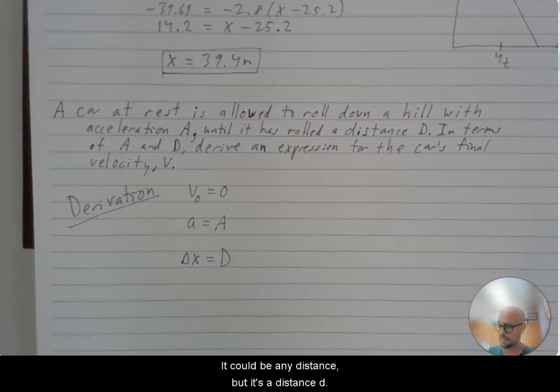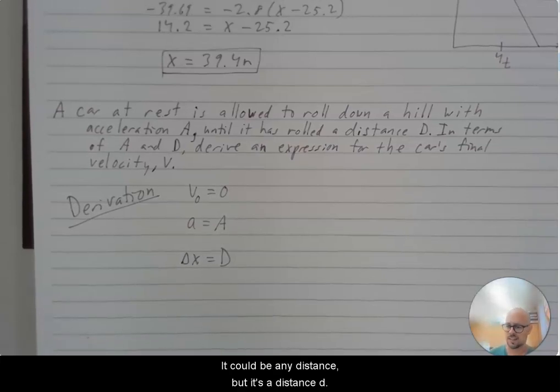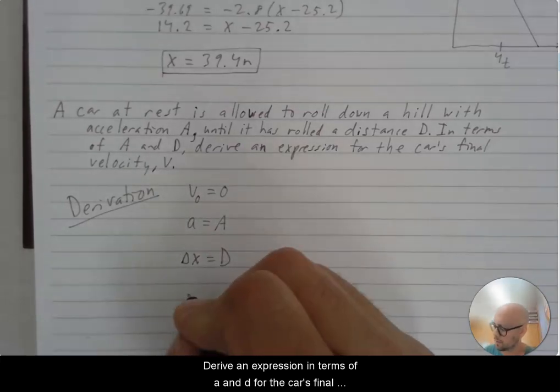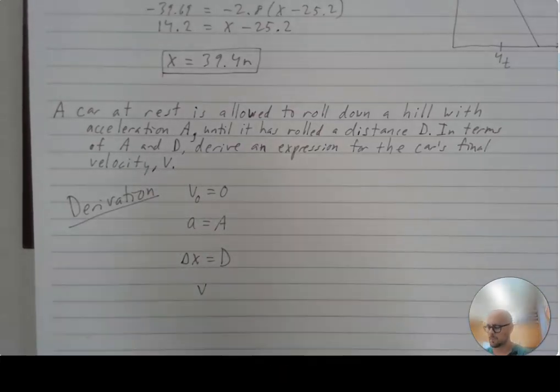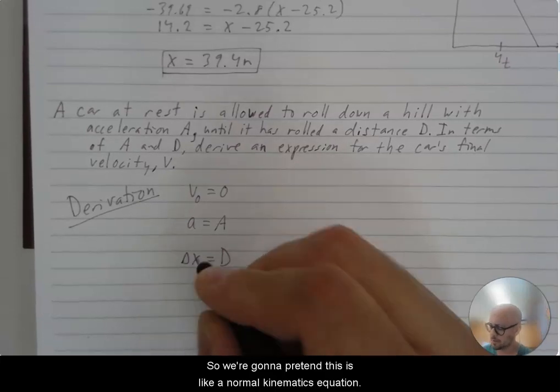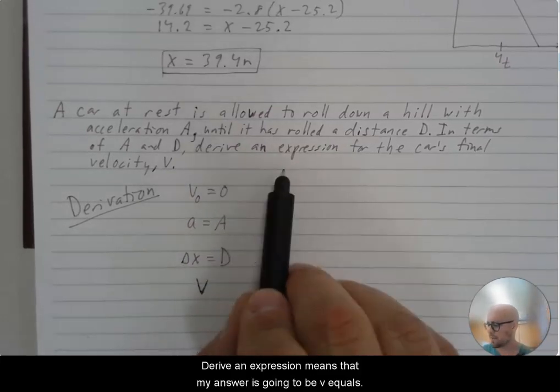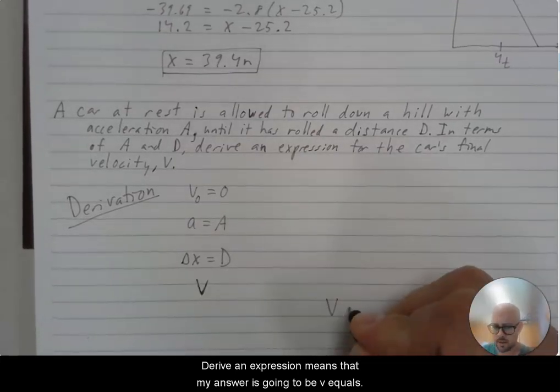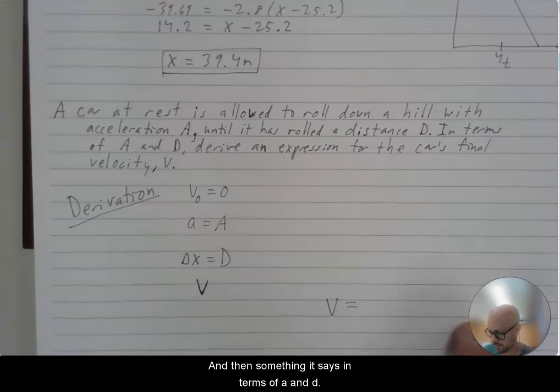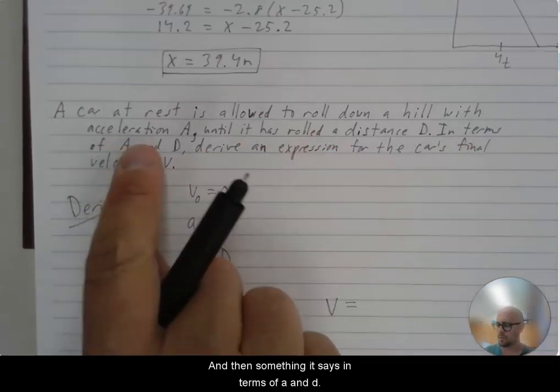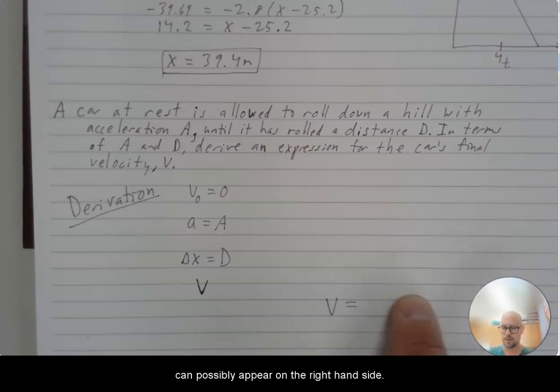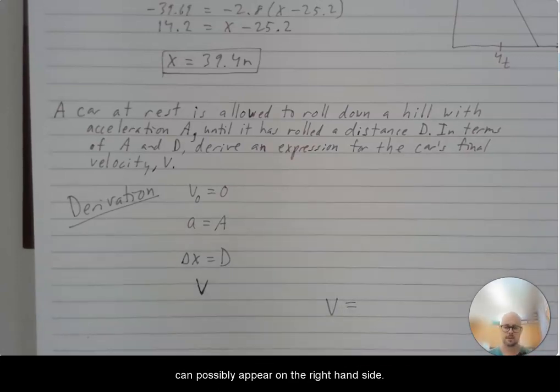Derive an expression in terms of a and d for the car's final velocity v. So we're going to pretend this is like a normal kinematics equation. Derive an expression means that my answer is going to be v equals and then something. It says in terms of a and d, that means that a and d can be the, are the only two variables that can possibly appear on the right hand side.